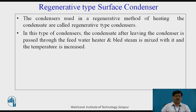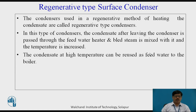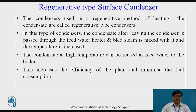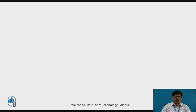In this type of condenser, the condensate after leaving the condenser is passed through the feedwater heater and bled steam is mixed with it, increasing the temperature. This gives the advantage that the condensate at high temperature can be reused as feedwater to the boiler, which will reduce the heat added in the boiler, resulting in higher efficiency of the boiler and the steam power plant overall, and it will minimize the fuel consumption.